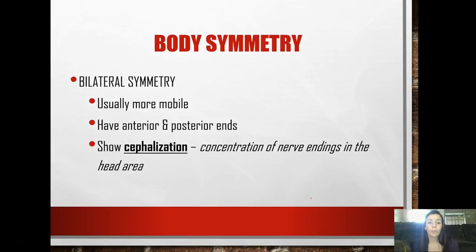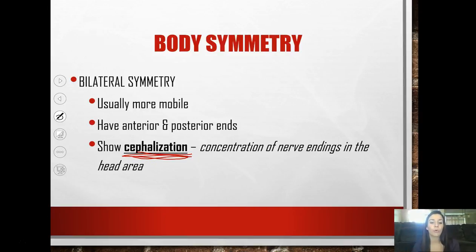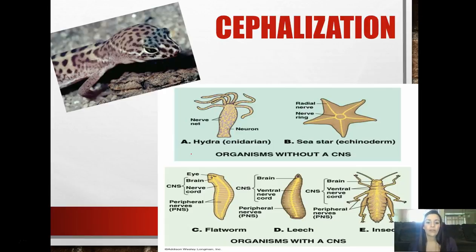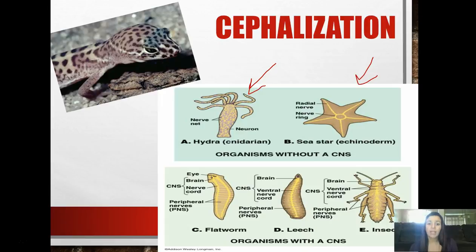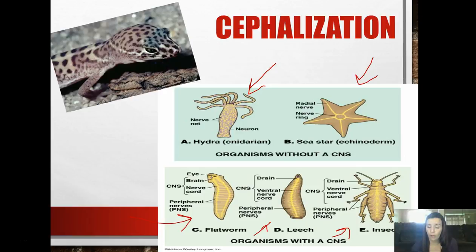Animals with bilateral symmetry are usually more mobile. They have anterior and posterior ends, and they show something called cephalization, which is a really important term you need to know. This is simply the concentration of nerve endings in a head area, usually a brain or something similar. Animals that have cephalization are typically bilaterally symmetrical. Flatworms, leeches, and even insects have some form of a brain, so they do show cephalization, and they're also bilaterally symmetrical.